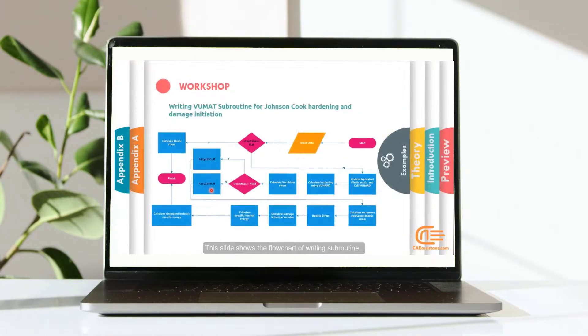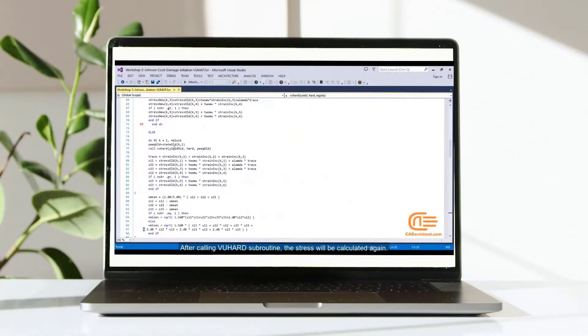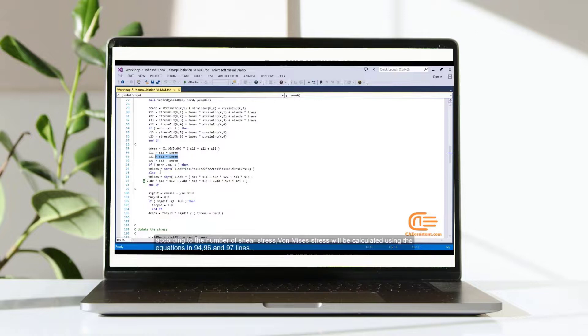This slide shows the flowchart of writing subroutine. Here is input data. After that, if we were in first increment, the elastic stress would be returned to the software as final stress. If not, equivalent plastic strain would be updated. If we were in elastic area, it would be zero. After calling VUHAR subroutine, the stress will be calculated again. And after calculating mean stress, the deviatoric stress will be calculated. According to the number of shear stress, von Mises's stress will be calculated using the equations in 94, 96 and 97 lines.